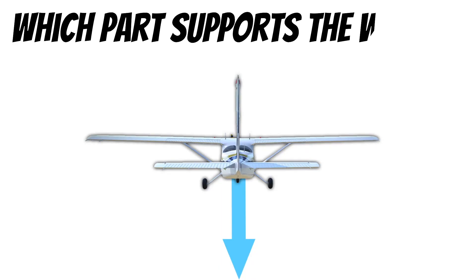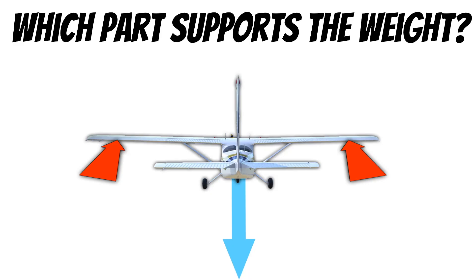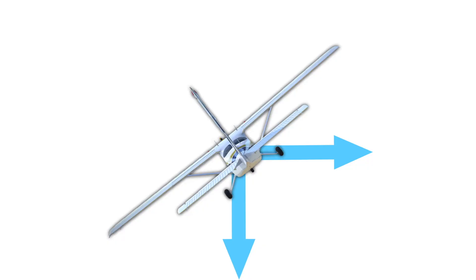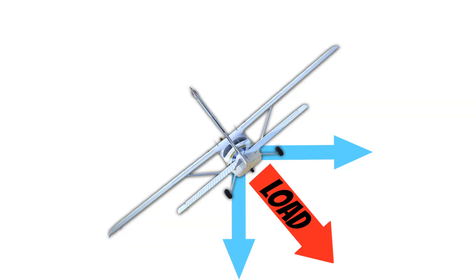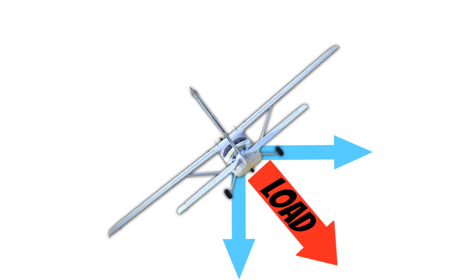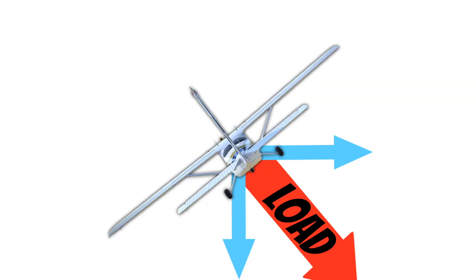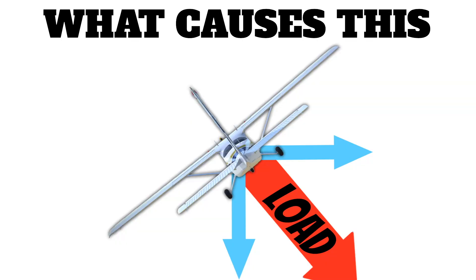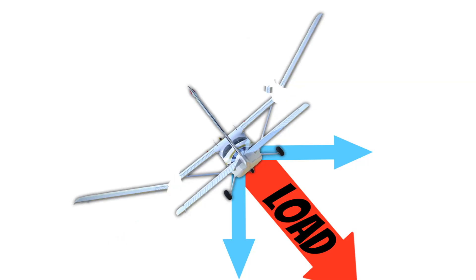The wings are responsible for holding up the weight of the aircraft. When we roll into a bank, airplane manufacturers have to account for the load factor placed on the wings — because if they didn't, the wings could literally break off any time you tried to roll. The load on your airplane can increase for quite a few different reasons, and you need to know what causes that increase so you don't accidentally break off the wings. Yes, people have actually broken their wings off because they didn't understand this.